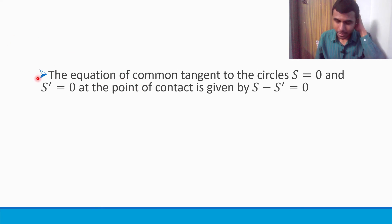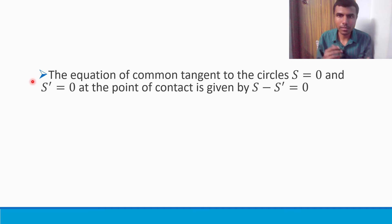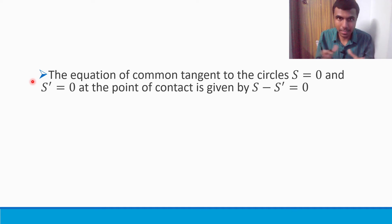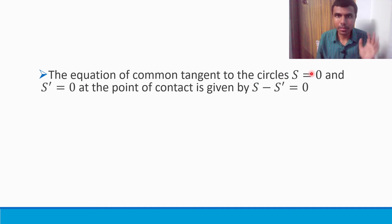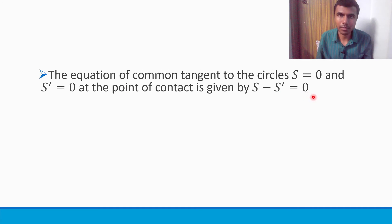Now the third thing we had to find was the equation of the common tangent. The equation of the common tangent to circles S = 0 and S dash = 0 is given by S minus S dash equal to 0.